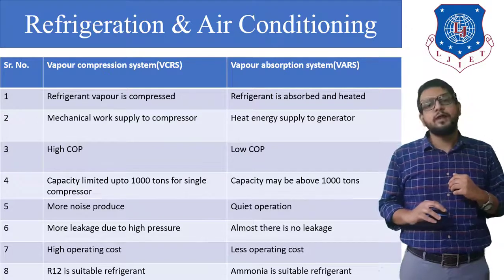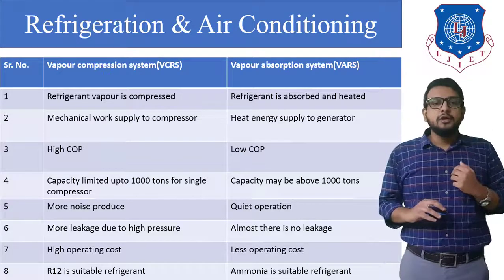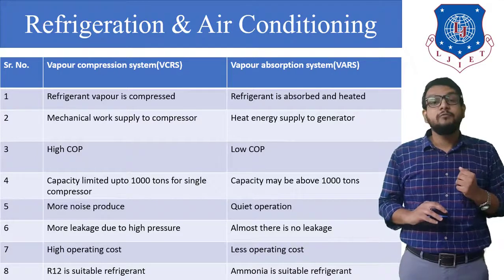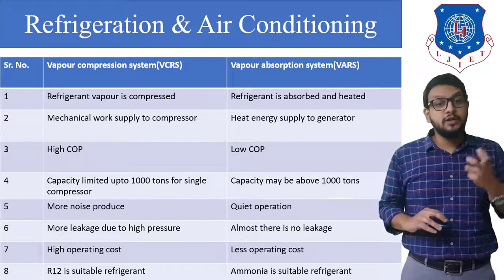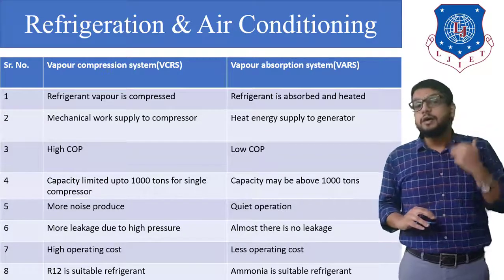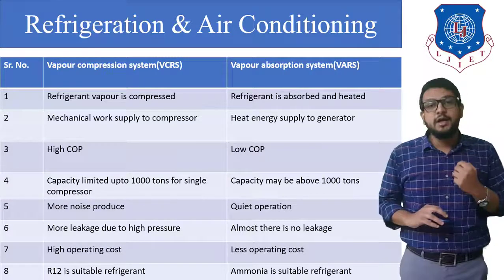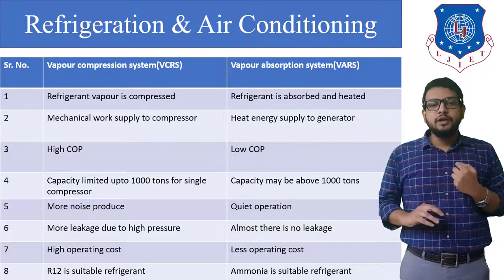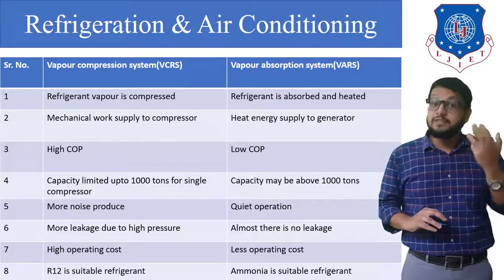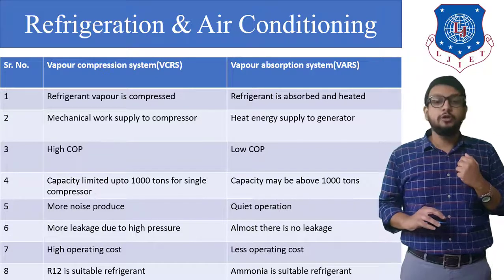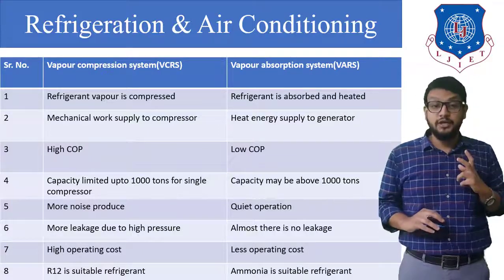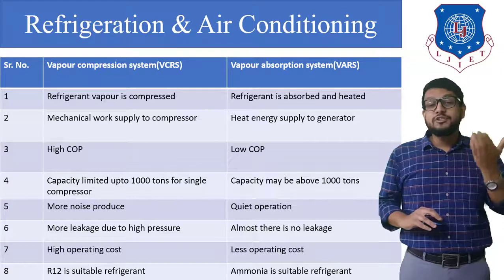Now comparing vapor compression (VCR) and vapor absorption (VAR) systems: First, in the VCR system the refrigerant vapor is compressed, whereas in the VAR system the refrigerant is absorbed in the absorber and heated in the generator. Second, in the VCR system electricity is supplied to the compressor, whereas in the VAR system heat energy is supplied to the generator — this is the main difference.